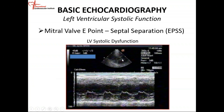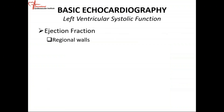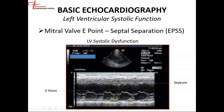On the M-mode display, the vertical axis represents distance and the horizontal axis represents time. You can measure the separation between the E-point and the septum. EPSS is a quick method to evaluate ejection fraction — but the only conclusion you can draw is whether the ejection fraction is reduced or normal.